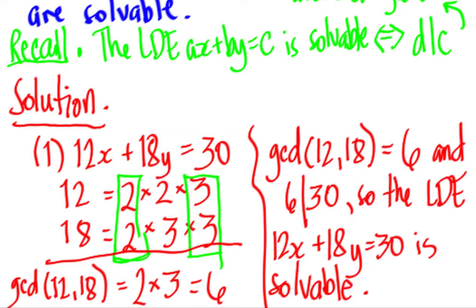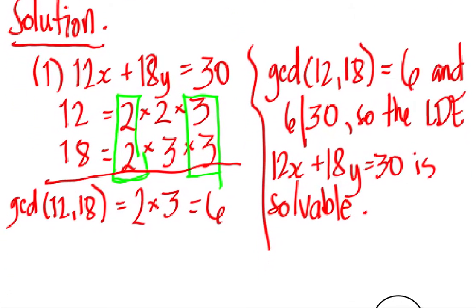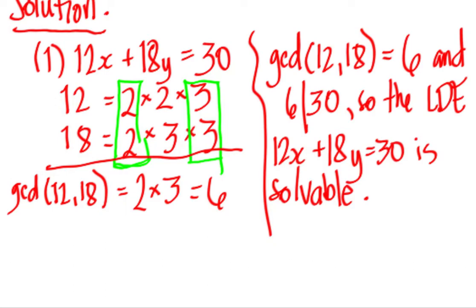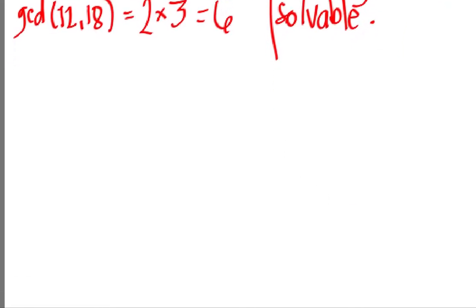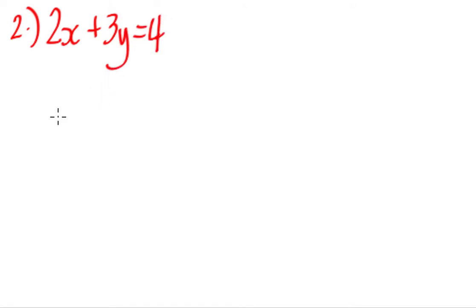Let's see for number 2. For number 2, we have 2x plus 3y equals 4. Again, we need to find the GCD of 2 and 3. And I think it's very much obvious that they are relatively prime because both of them are prime, obviously. So we can see that this is based on our corollary. Based on our corollary, if the GCD of any pair of numbers a and b is 1, that is they're relatively prime.